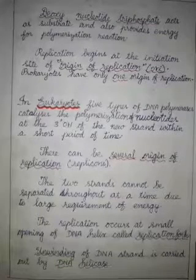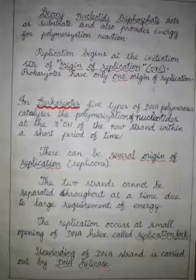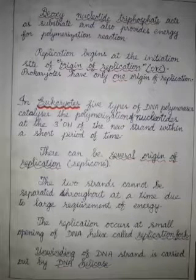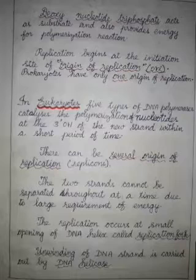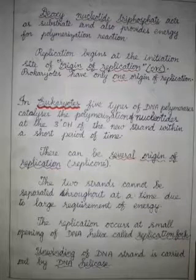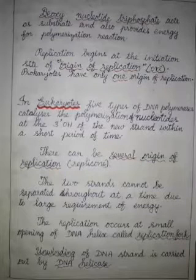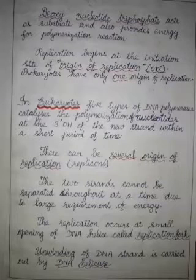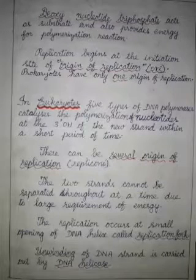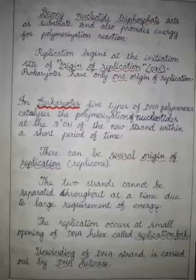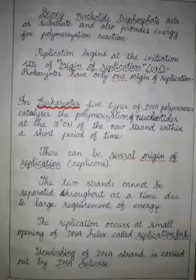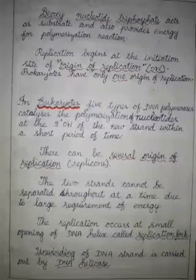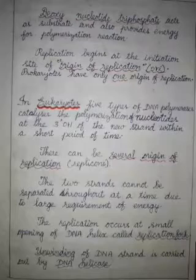In prokaryotes there are three types of DNA polymerases involved in replication. In eukaryotes there are five types of DNA polymerases which catalyze the polymerization of the nucleotides.